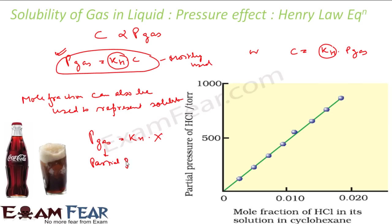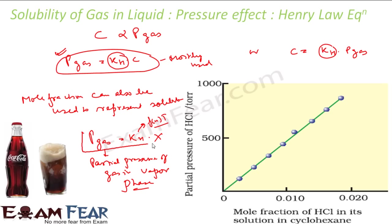This data shows the mole fraction of HCl in cyclohexane versus partial pressure. HCl is the solute and cyclohexane is the solvent. As the mole fraction increases, the partial pressure increases — confirming that mole fraction is directly proportional to partial pressure.